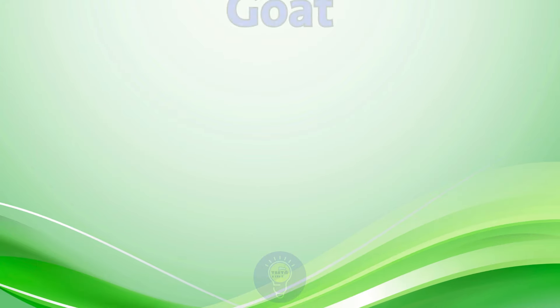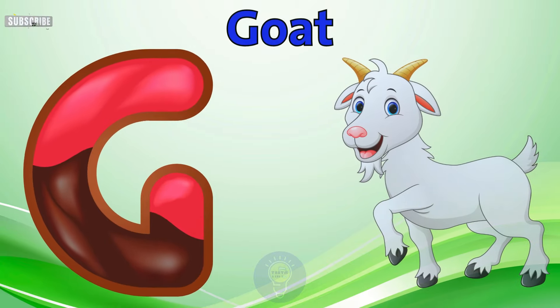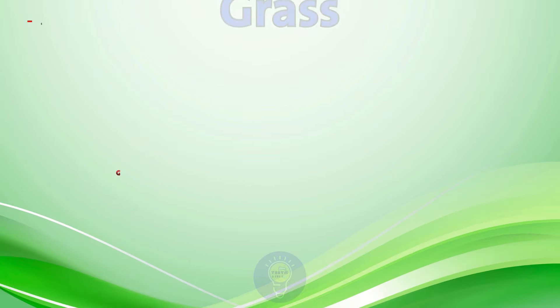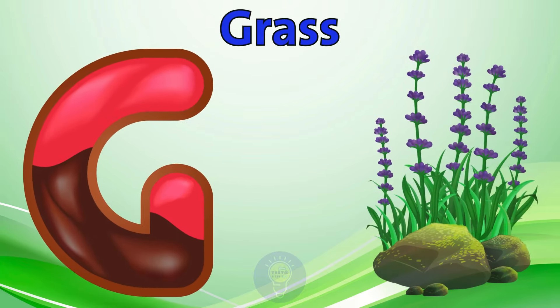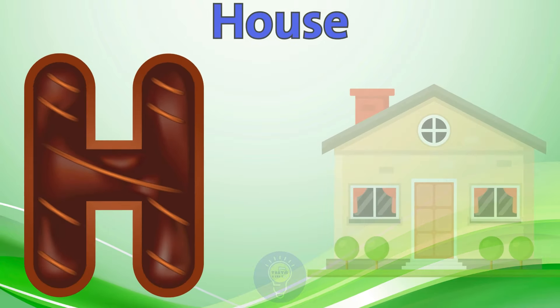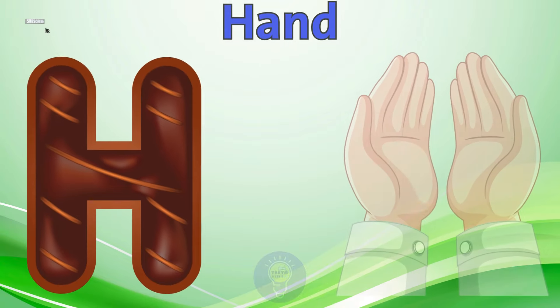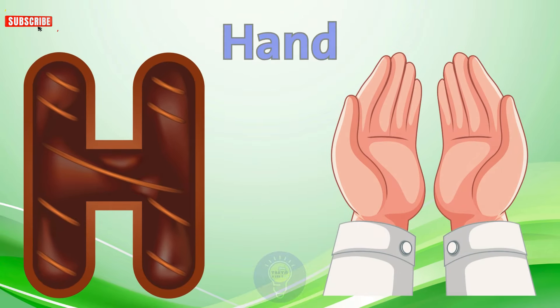G is for Goat. G, G. Goat. G is for Grass. G, G. Grass. H is for House. H, H. House. H is for Hand. H, H. Hand.